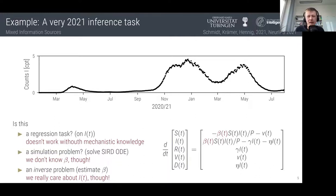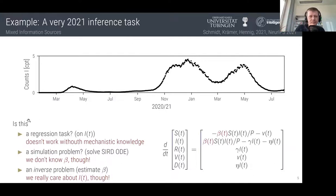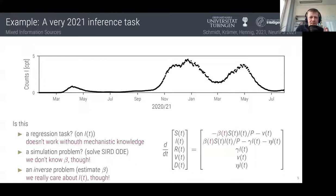Beta, the contact rate, describes how often people meet in public. If it were constant, the curve would show pure exponential growth. But we know that didn't happen — people changed their behavior and beta went down. How did it evolve over time? If we don't know beta, we can't simulate forward, but we have the observed data, which should tell us something about beta. This is a problem where we don't just care about knowing beta — we care about the forward solution I into the future. It's a mixture of a forward and inverse problem: one source of information is mechanistic, another is empirical data.